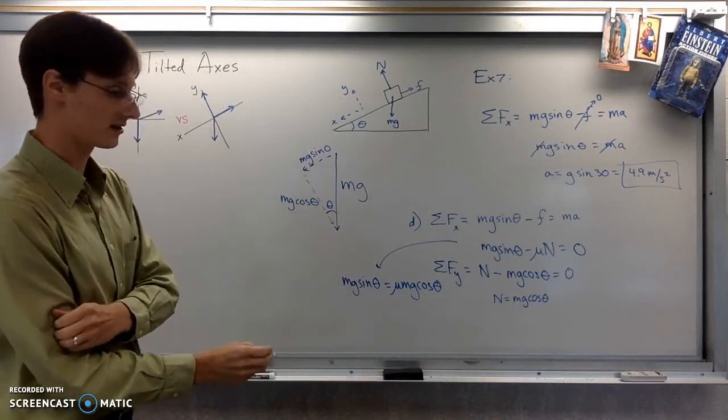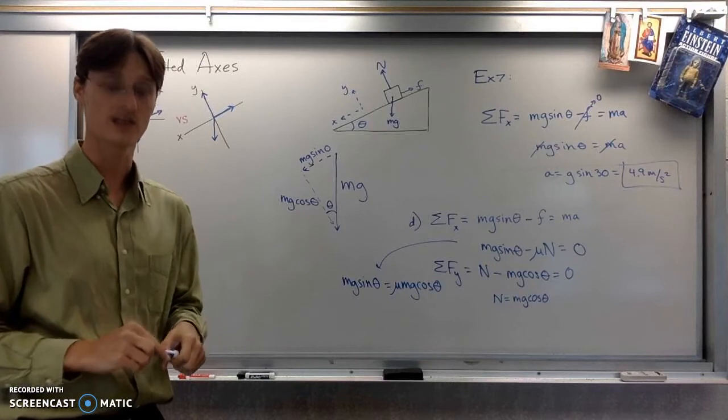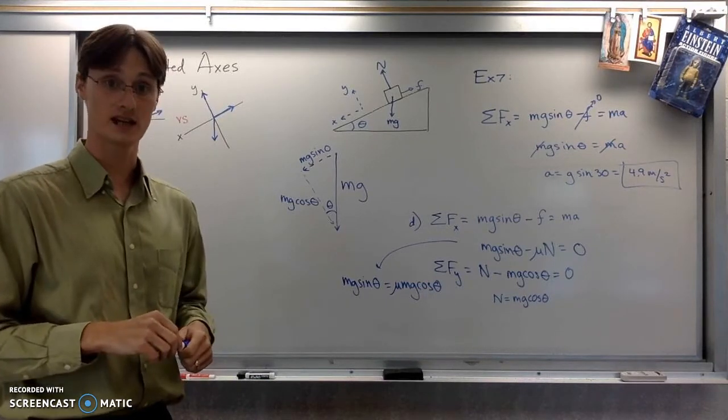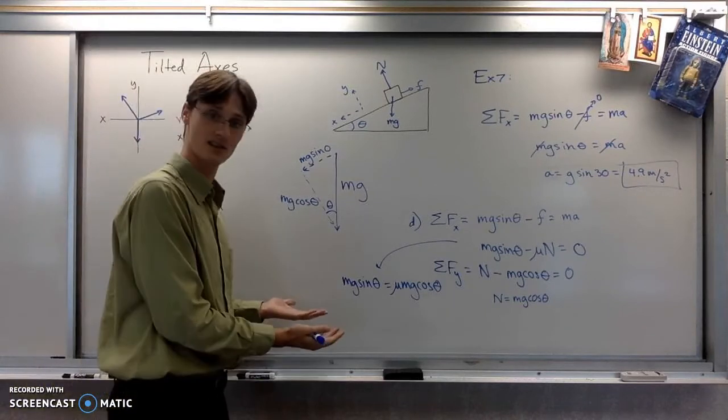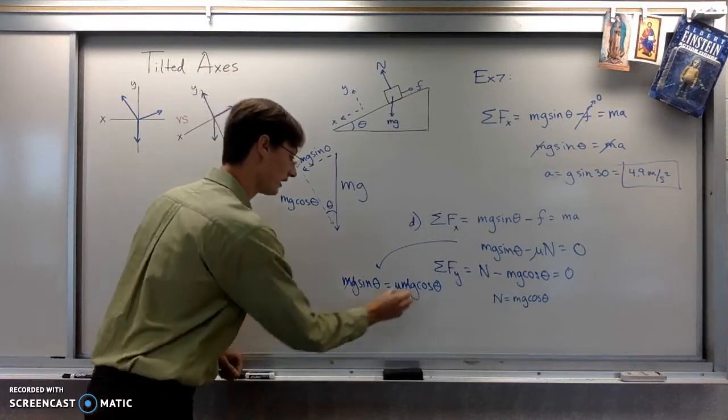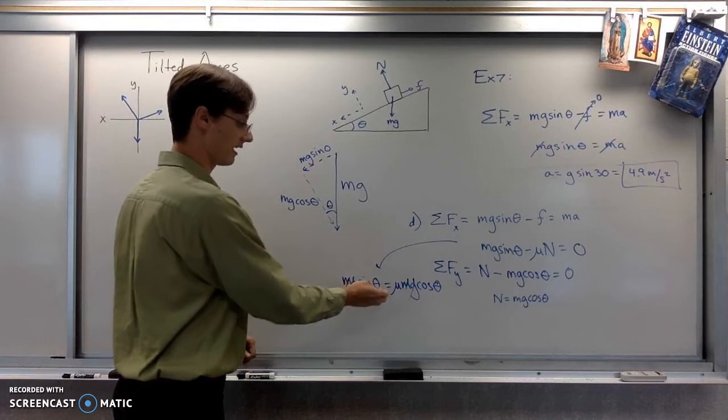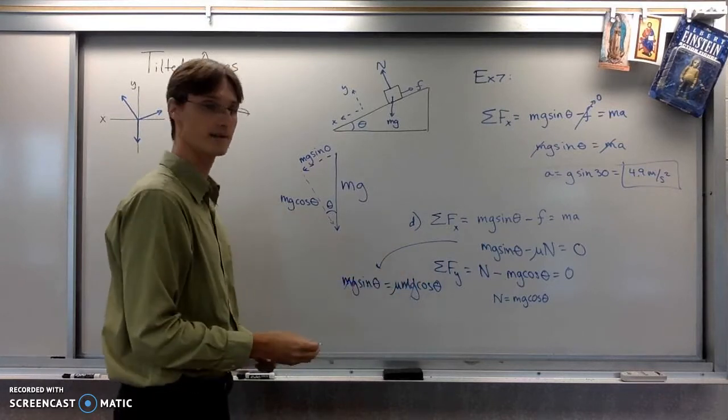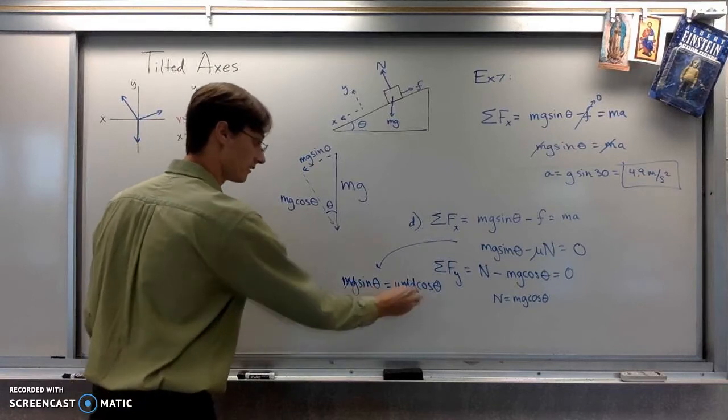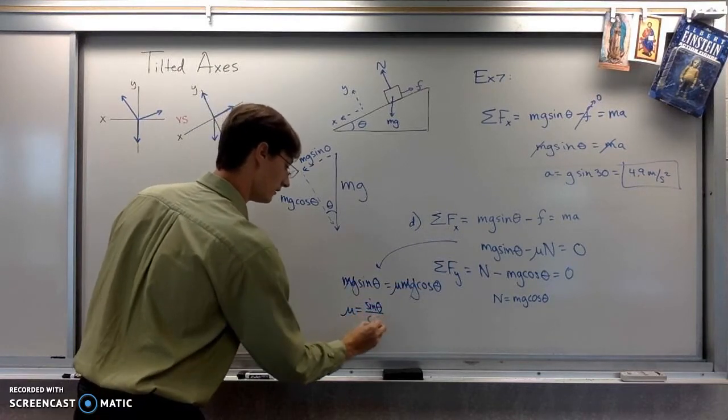So now it's going to ask us to determine the coefficient of friction. Again, notice, if you worked this out with numbers, you wasted your time. There's going to be all kinds of stuff that cancels. You should look at this and be like, oh, the m, the m goes away. Oh, so does the g. So the only things we're left with are sine theta and mu cosine theta. So mu is sine divided by cosine.